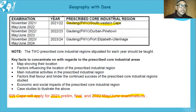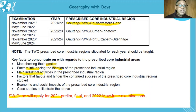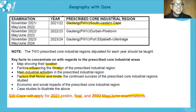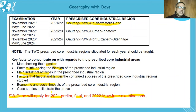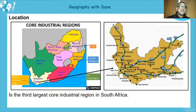So what are we going to look at here? As we did with the PWV, we'll look at the location, factors influencing location, the prescribed industrial area of the southwestern cape, main industrial activities, factors favoring and hindering this core industrial region, and the economic and social impacts. Instead of a case study, we'll look at a past paper — but please note you must do case studies as your teachers give you in class.